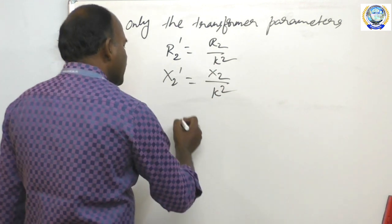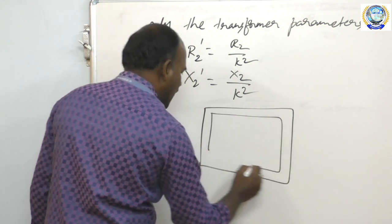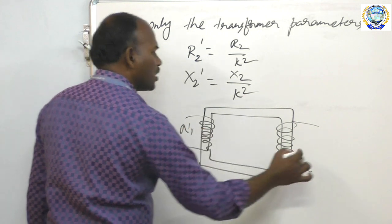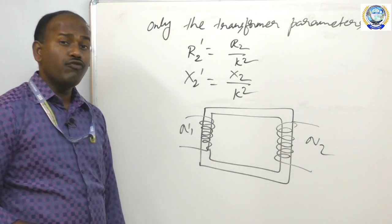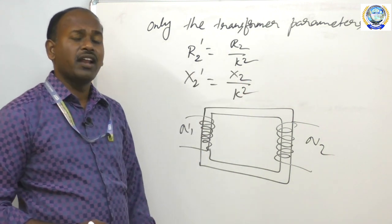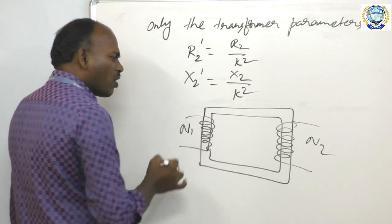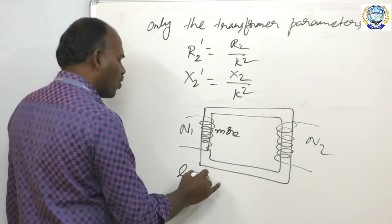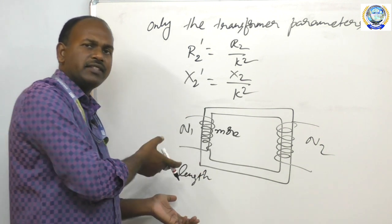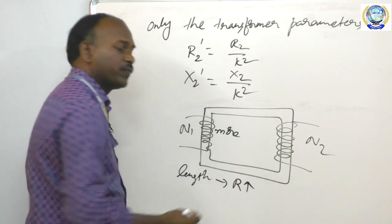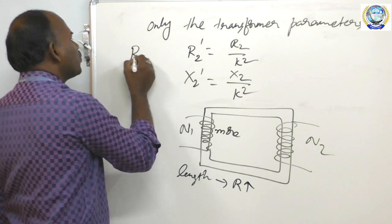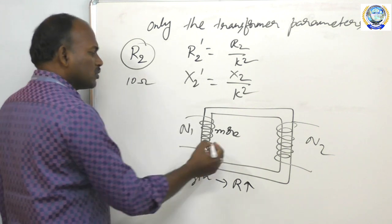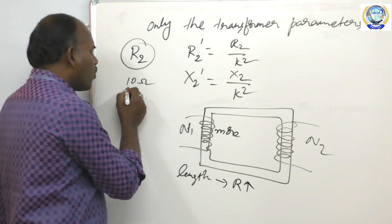There is a simple logic: if the transformer has N1 turns on the primary side and N2 turns on the secondary side, and you get confused about whether to divide or multiply by K square — when the number of turns is more, the length is more. When the length is more, the resistance is more. So suppose you have R2 of 10 ohms, and N1 is more than N2.